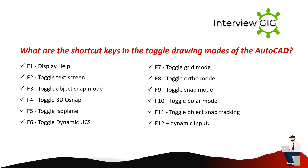What are the shortcut keys for toggle drawing modes in AutoCAD? F1 — display help. F2 — toggle text screen. F3 — toggle object snap mode. F4 — toggle 3D object snap. F5 — toggle isoplane. F6 — toggle dynamic UCS. F7 — toggle grid mode. F8 — toggle ortho mode. F9 — toggle snap mode. F10 — toggle polar mode. F11 — toggle object snap tracking. F12 — dynamic input.